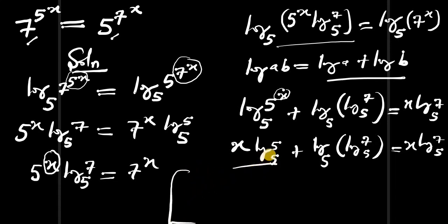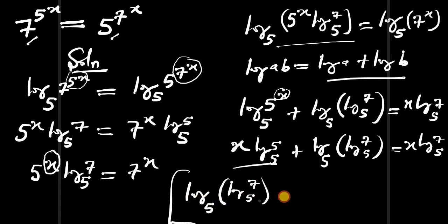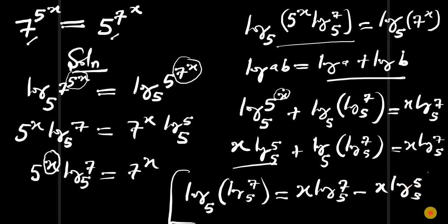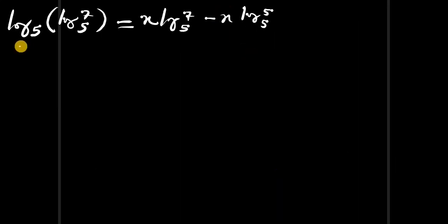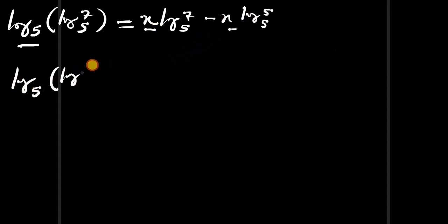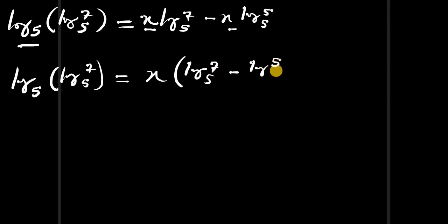We take the x · log_5(5) term to the right side of the equation, giving us: log_5(log_5(7)) = x · log_5(7) − x · log_5(5). There is an x in both terms on the right, so we factor it out: log_5(log_5(7)) = x · (log_5(7) − log_5(5)).